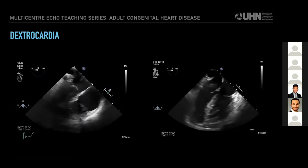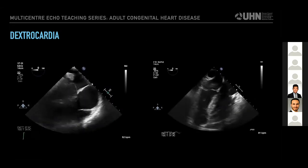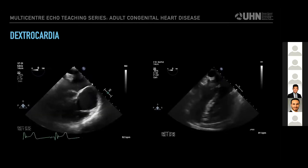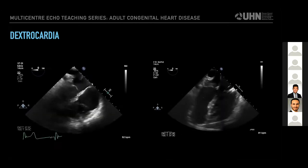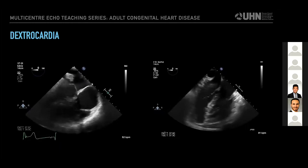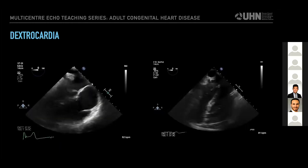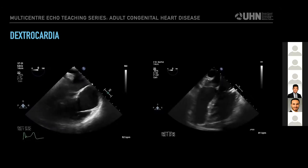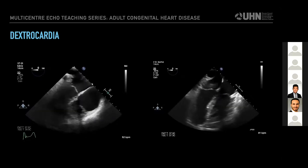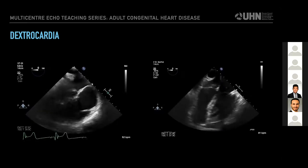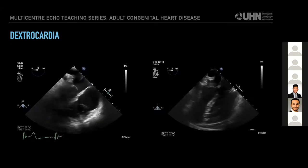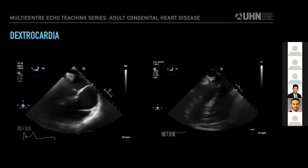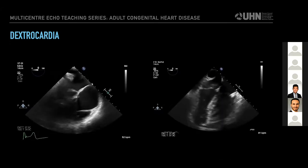Here are two clips from two different patients, each with a diagnosis of dextrocardia—both also have dextral position. That doesn't really impact our ability to get reasonable mid-esophageal four-chamber views at zero degrees with some minor adjustments in probe rotation. Both clips clearly show a four-chamber heart oriented with the apex to the patient's right, contrary to the conventional orientation.